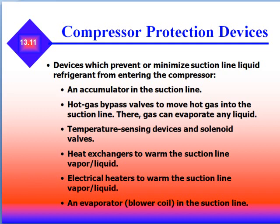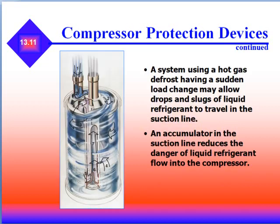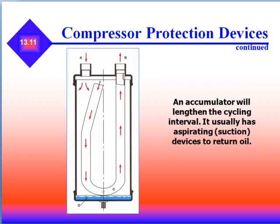We're going to continue our conversation on pressure compressor protection devices. A system with hot gas defrost may suddenly have a load change that allows drops and slugs of liquid refrigerant to travel in the suction line. An accumulator in the suction line reduces the danger of liquid refrigerant flowing into the compressor, and it will also lengthen the cycling interval. It usually has aspirating or suction devices to return the oil to the compressor.